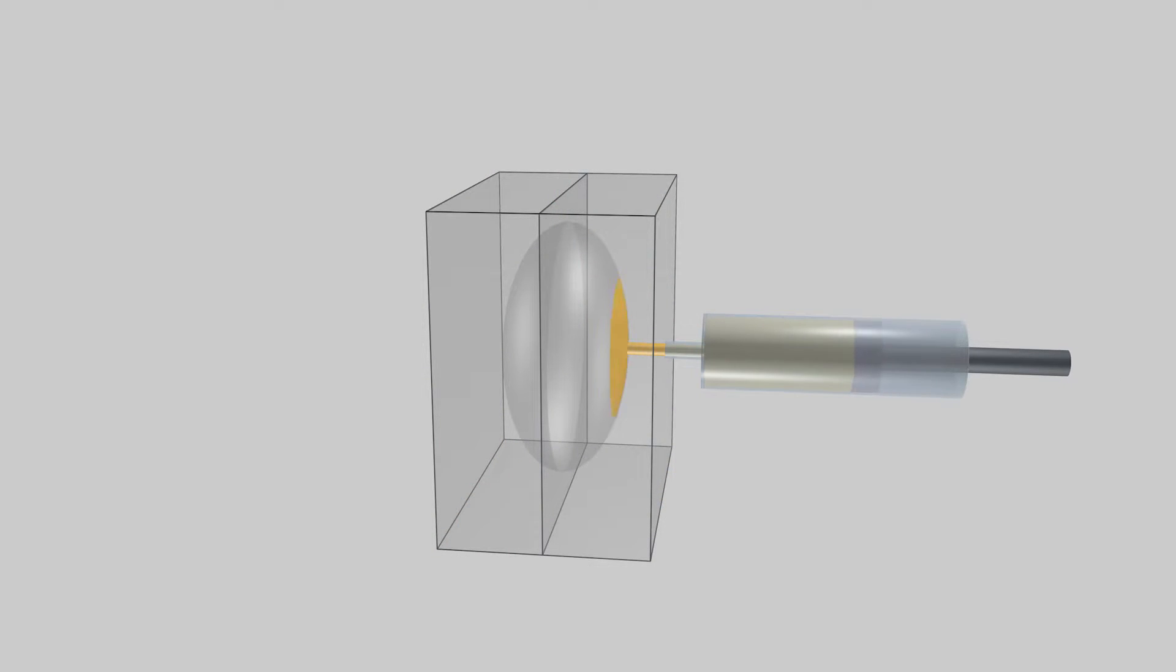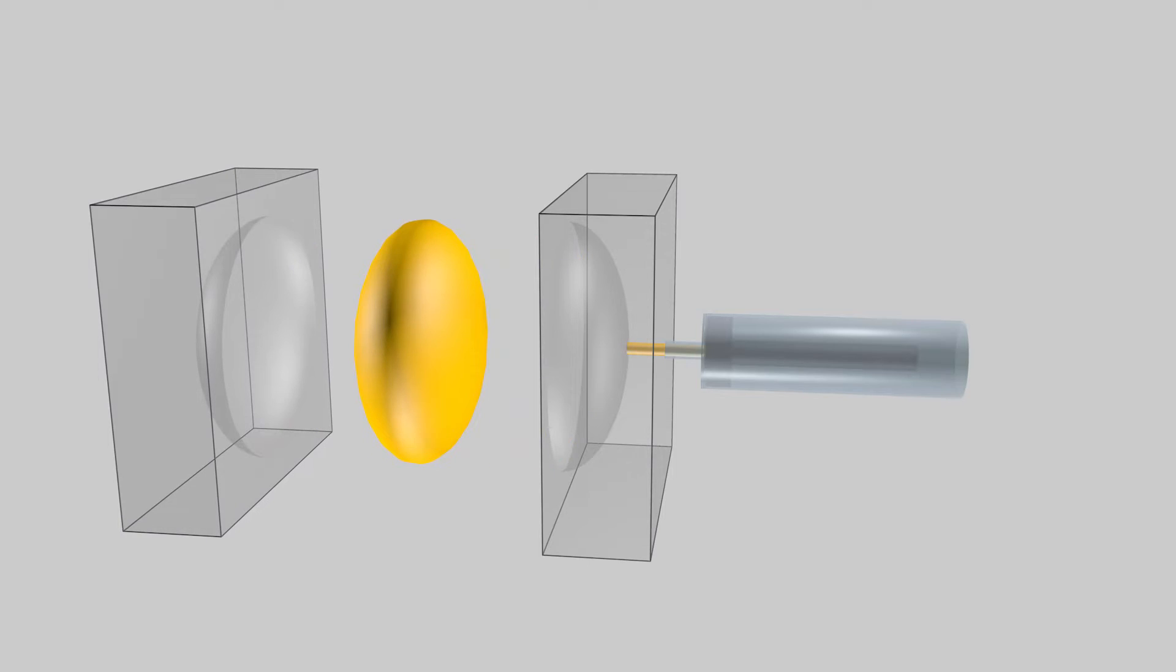In principle, injection molding is simple: melt plastic, inject it into a mold, let it cool, and then out pops a plastic product. In reality, injection molding is an intricate and complex process.